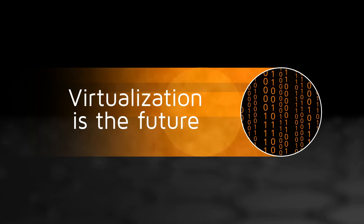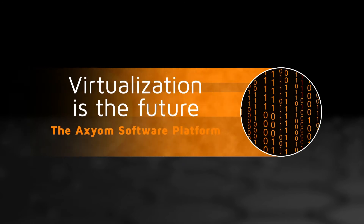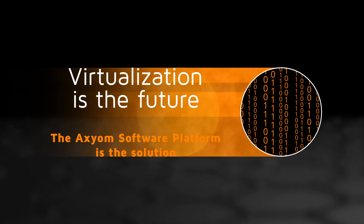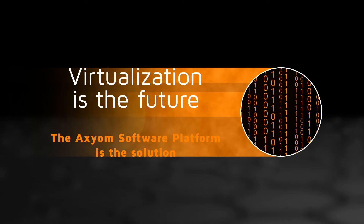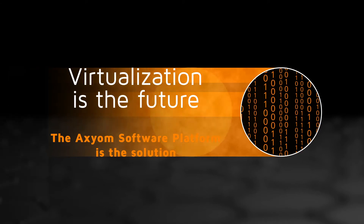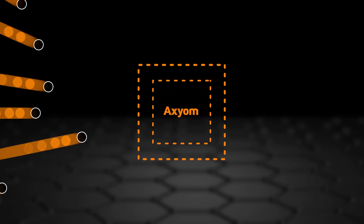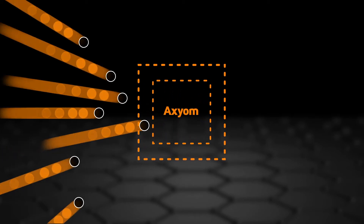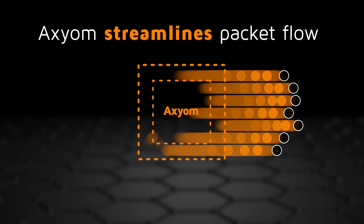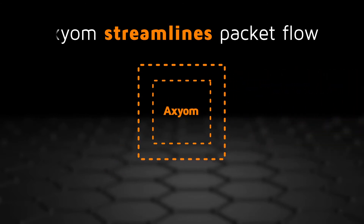Virtualization is the only way to achieve these goals, and CASA Systems' Axiom Software Platform for cable, mobile, and fixed broadband is the best way to get you there. The Axiom Software Platform is CASA's virtual software architecture. It dramatically streamlines the flow of packets in three ways.